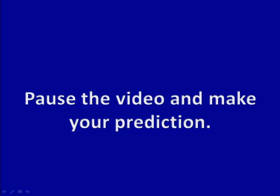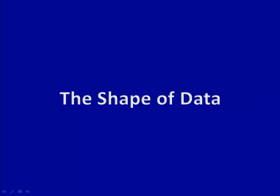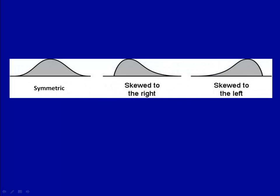Now that we've made our prediction, let's talk about the shape of data. What on earth does that mean? Well, when we talk about the shape of data, we're talking about which of these it most looks like. Is the data symmetric, the same on each side? Is it skewed to the right, with a few people off to the right-hand side? Or, is it skewed to the left, with a few people off to the left? And how on earth can you tell?